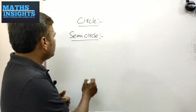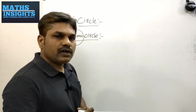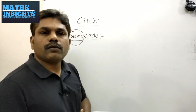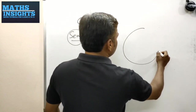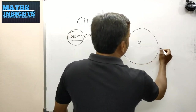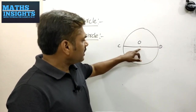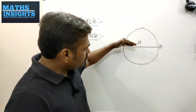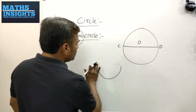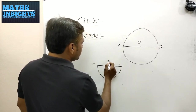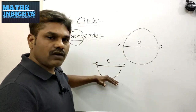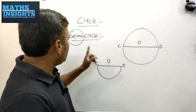Next, we will go to the semicircle. The name itself tells you: semi means half of the circle. Therefore, if you divide a circle into two equal halves through its diameter, then each of the parts is called a semicircle. Taking a circle with centre O and diameter CD — this is also the biggest chord because it passes through the centre — this diameter divides the circle into two equal halves. Each half, with C and D as endpoints, is called a semicircle.